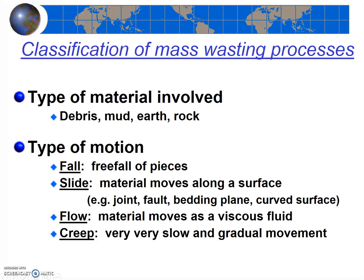To name an event, simply take the type of material and combine it with the motion. If a rock falls, it's called a rock fall. If rock slides, it's called a rock slide. If mud flows, it's called a mud flow. You get the idea — it's pretty easy.